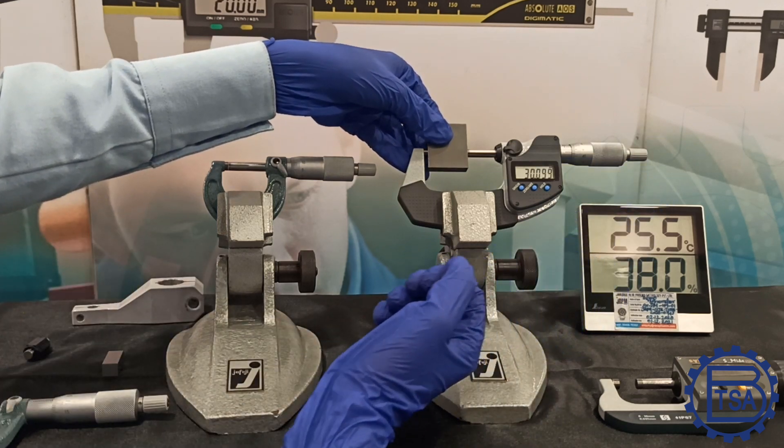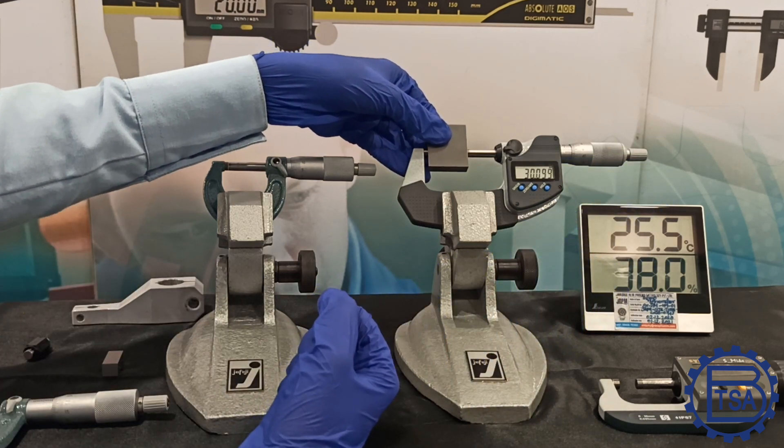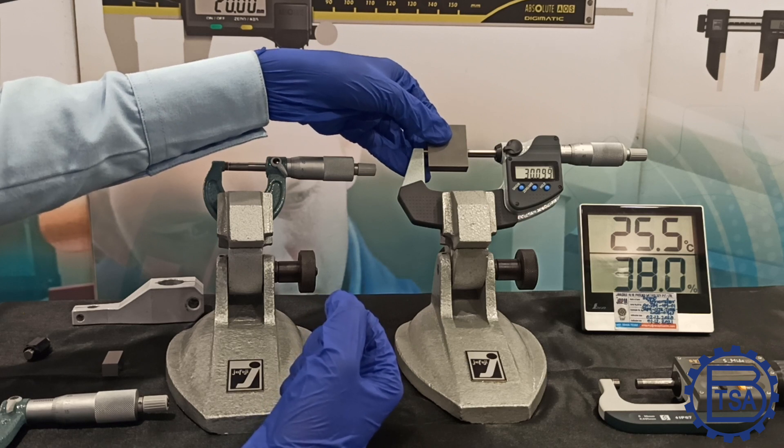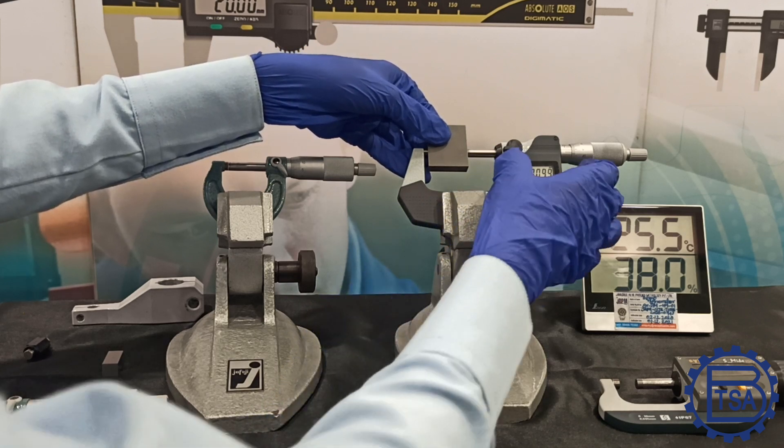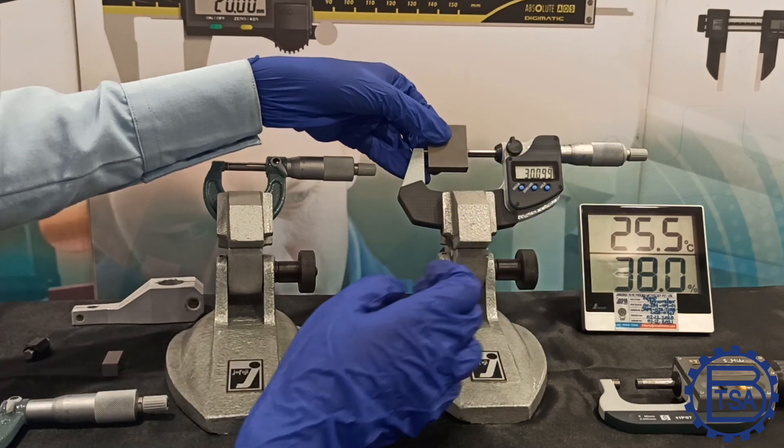This will be useful in supplying constant force and helps to measure a component with repeatability. Use the locking knob when the part is measured and then note the reading.